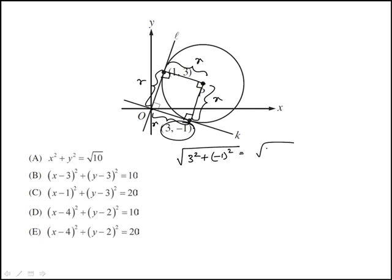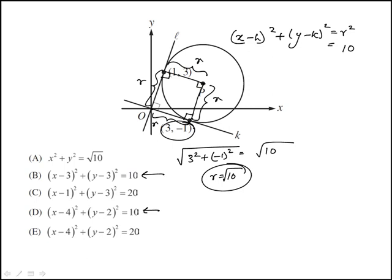So this would be square root of 10. So the radius is square root of 10. So the equation of the circle would be (x - h) squared plus (y - k) squared equal to r squared. r squared here would be 10. So we know that we've narrowed it down between that and this.